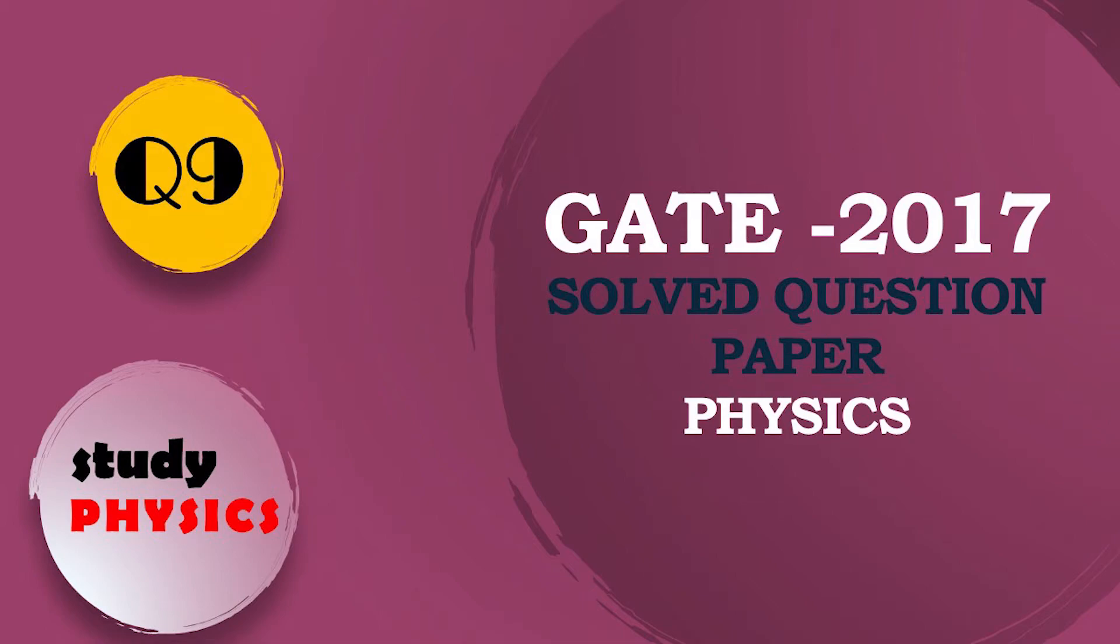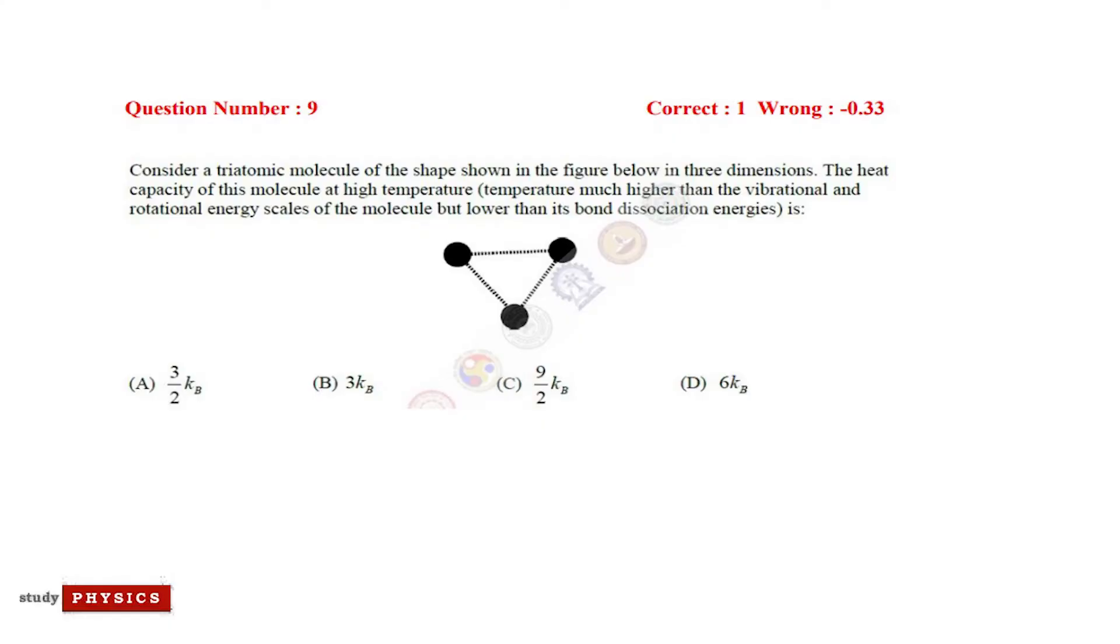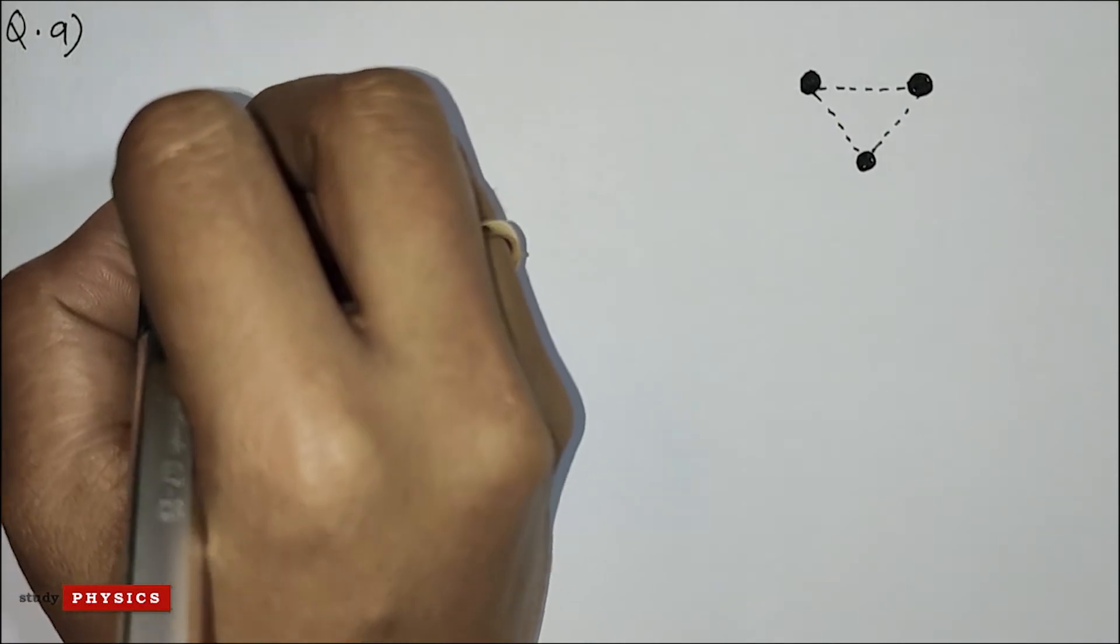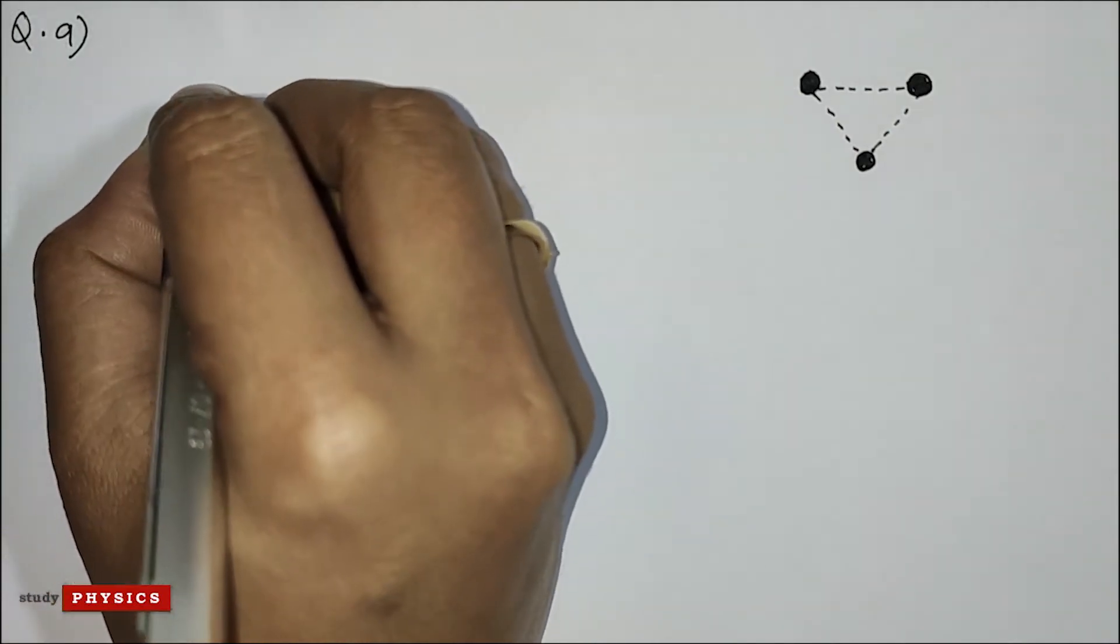Hi everyone, welcome to Study Physics. Here's question number nine: Consider a triatomic molecule of the shape shown in the figure below in three dimensions. The heat capacity of this molecule at high temperature is...